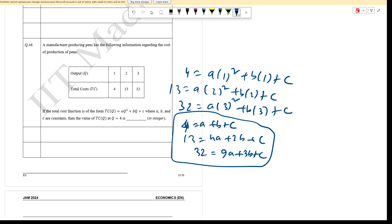Solving these equations will give us values of a, b, and c. After solving, a equals 5, b equals minus 6, and c equals 5. Therefore, the total cost function is 5Q squared minus 6Q plus 5. For Q equals 4, this gives us 80 minus 24 plus 5, which equals 61.